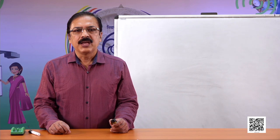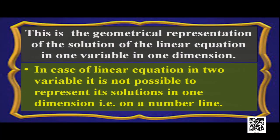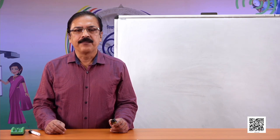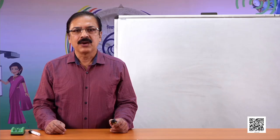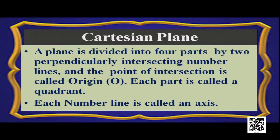In the case of a linear equation in two variables, it is not possible to represent its solution in one dimension, that means on a number line. We have to represent it on a Cartesian plane. A Cartesian plane is a plane divided into four parts by two perpendicularly intersecting number lines. The point of intersection is called the origin, each part is called a quadrant, and each number line is called an axis.